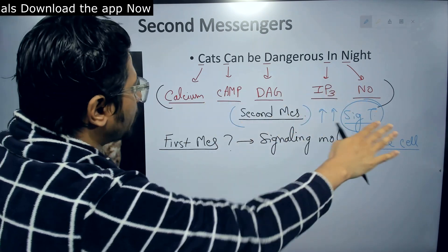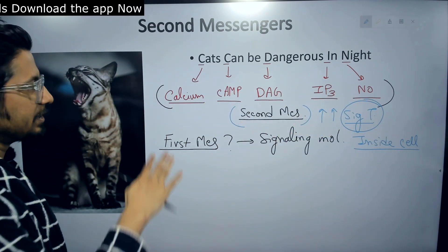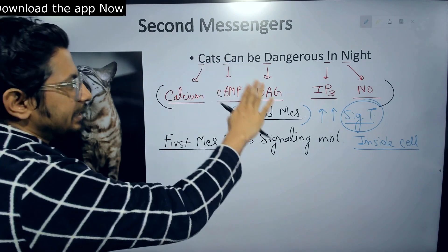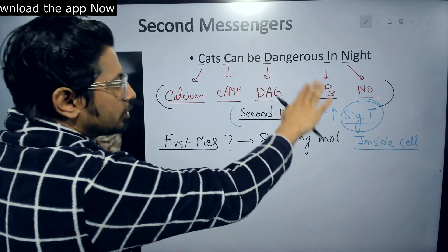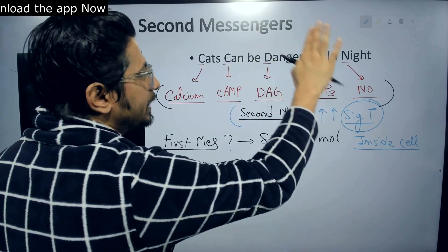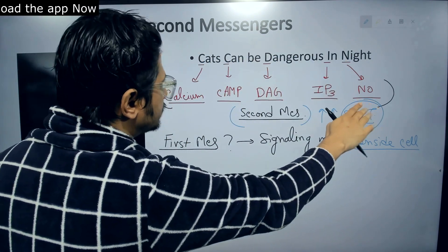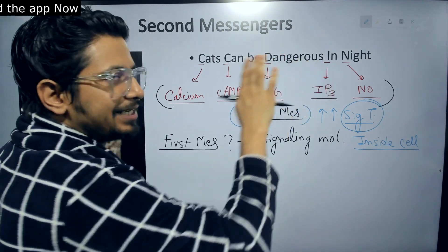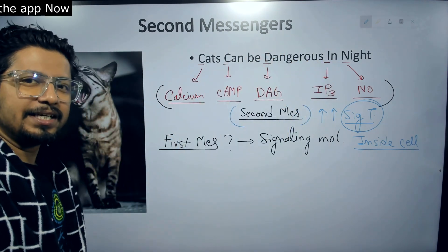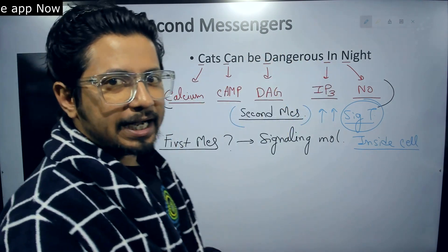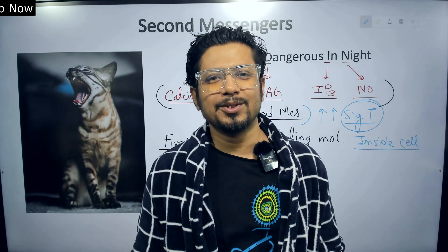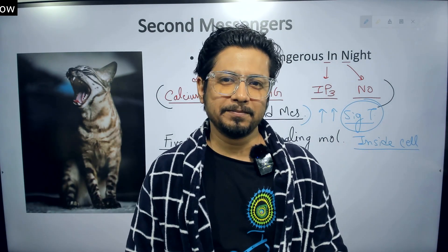So from outside, signaling is through the signaling molecule, but inside the cell, that is carried out by these second messengers. These are the five important second messengers: calcium, cyclic AMP, diacylglycerol, inositol trisphosphate, and nitric oxide. Cats can be dangerous in night. If you remember that and imagine this image, you are ready to go and will never forget this topic.